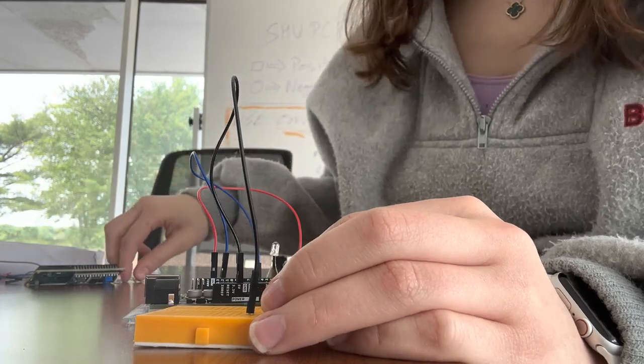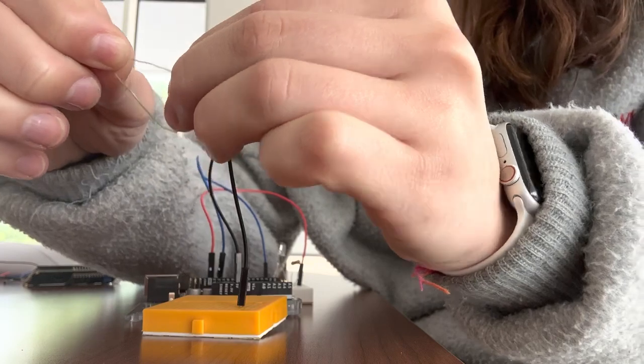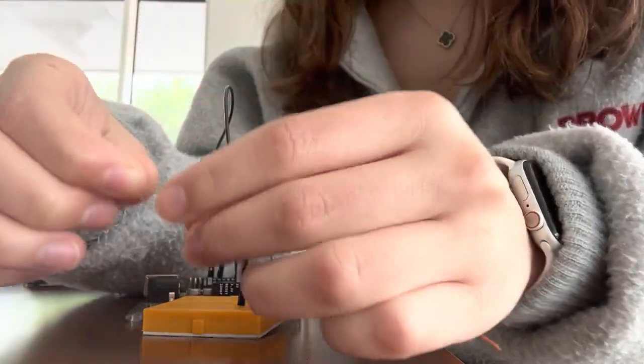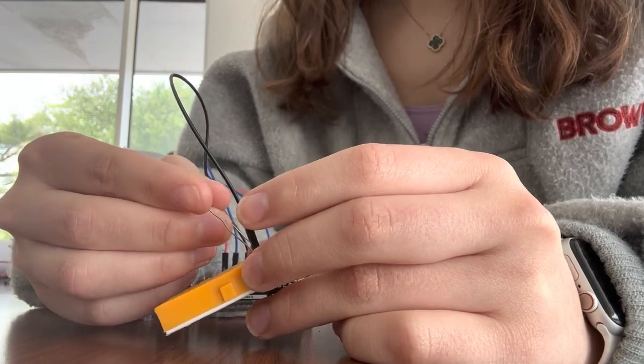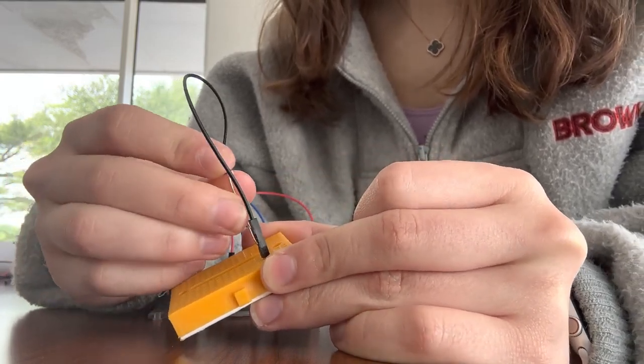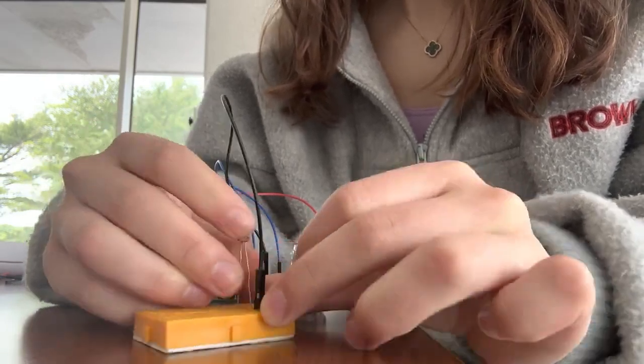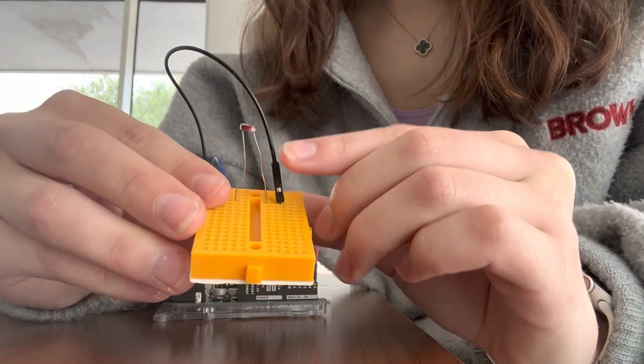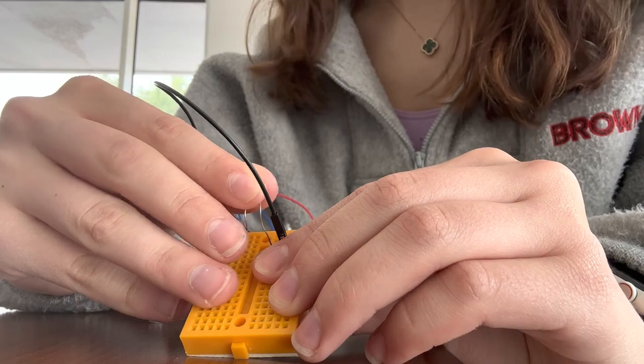Now you want to get your photoresistor. And what we're going to do with this is since the photoresistor doesn't have any polarity, we're going to connect one side to the same line as the jumper cable. So the photoresistor doesn't have any polarity. So you can really connect any end because they're both the same. So one ends with the wire that's five volt and the other one is just on its own line.